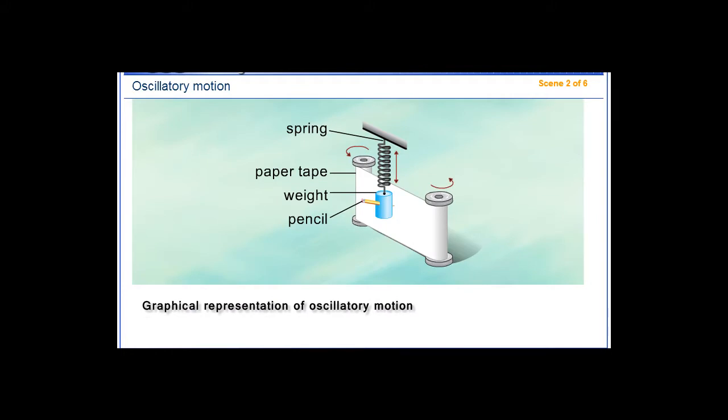Graphical representation of oscillatory motion. As you can see, the spring is moving up and down in oscillatory motion, and as it moves, the pencil attached to the weight draws the motion of the spring on paper, giving us a graphical representation of oscillatory motion.